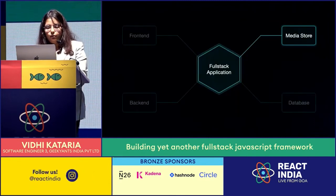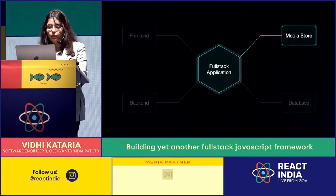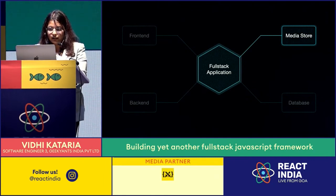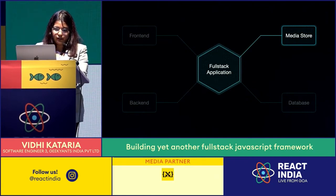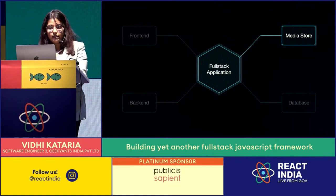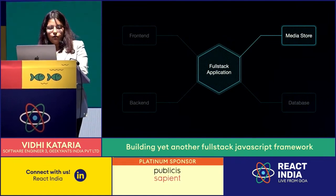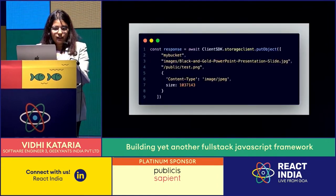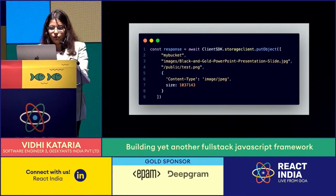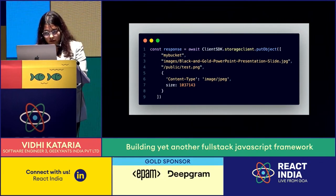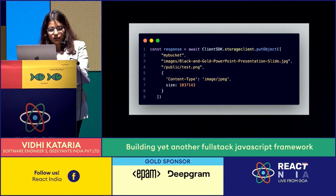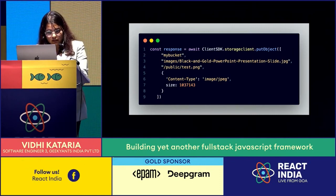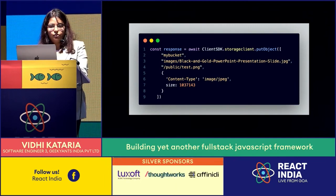Last but not least is media storage, which has the same issue — we can't access it from the frontend. Hence, a client SDK for the storage plugin was needed. We are using MinIO for the storage SDK right now. We generate an SDK that provides you with all the MinIO functions on the frontend, and internally calls a request to the service gateway, which also has a service created when you add the storage plugin to your application.